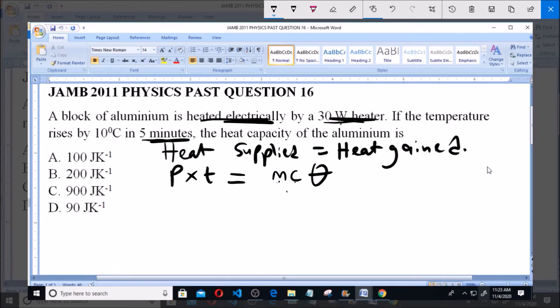Now, what you have to get is the heat capacity, and you can re-express this as P times T is equal to C theta, where C is equal to MC. So C is the heat capacity while MC together is the specific heat capacity.